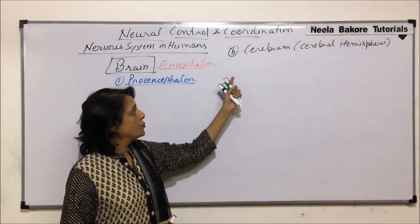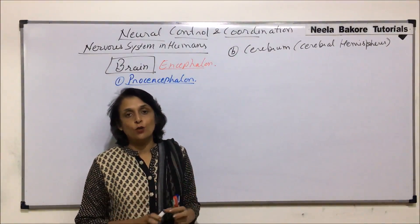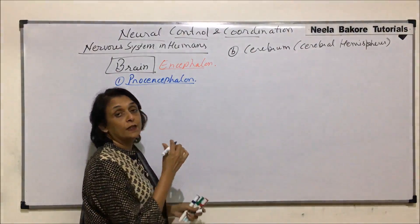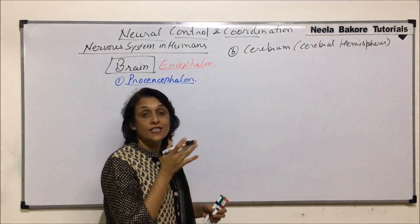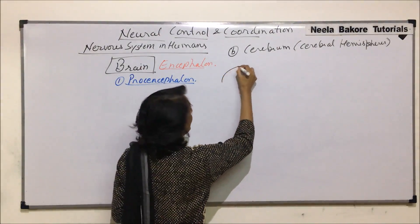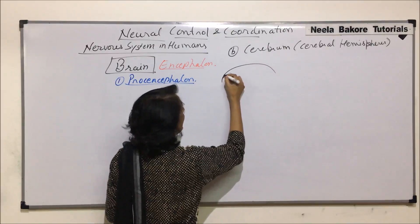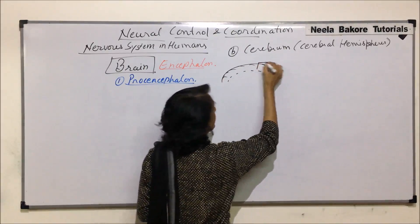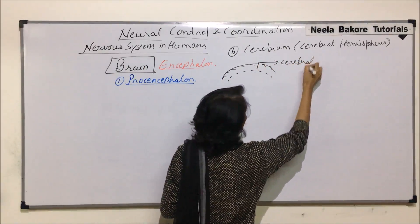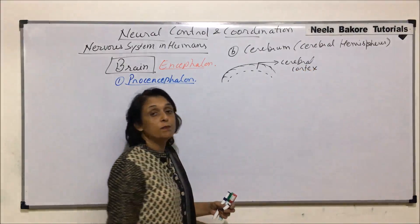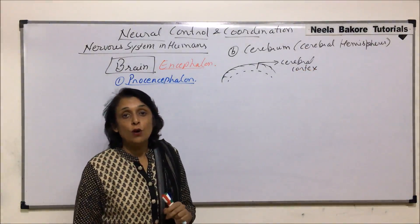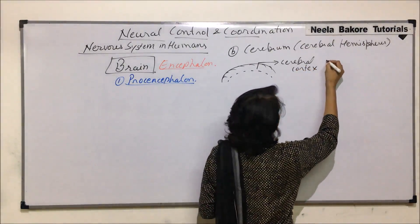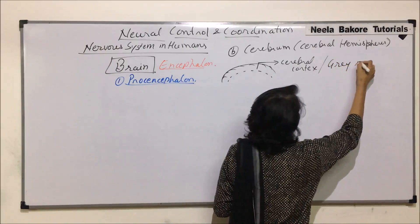We have seen the lobes of the cerebrum and how these lobes are formed. Now we will talk about the internal structure. If we see the section of the cerebral hemisphere, the outer part is known as the cortex — the cerebral cortex — which is made up of only the neuron cell bodies. This is also known as gray matter.